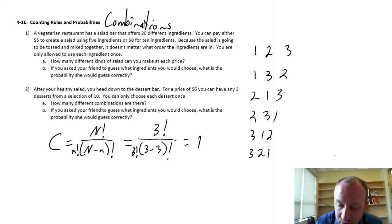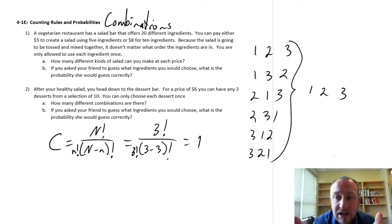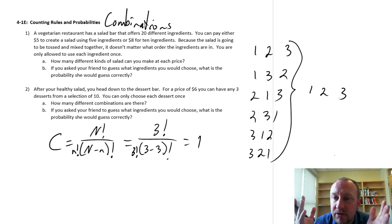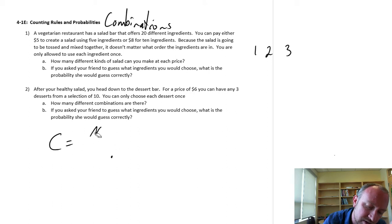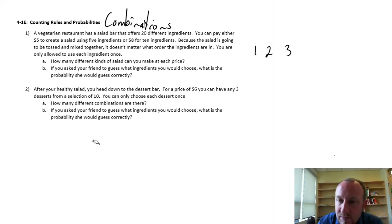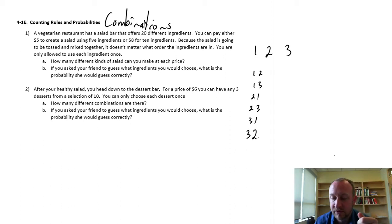What that means is that we don't care about all of these different orderings of these values — this is just one combination. I have three numbers, I'm choosing three of them, and there exists only one combination. Now that differs from if I were to consider three values but now choose two instead. If I'm only going to choose two values, how many different permutations might there be? I have: 1 and 2, 1 and 3, 2 and 1, 2 and 3, 3 and 1, and 3 and 2. So again it turns out to be six different permutations.